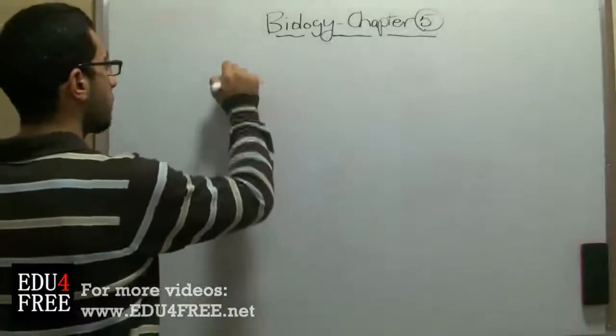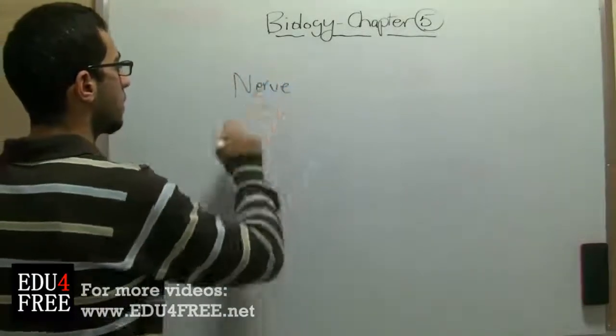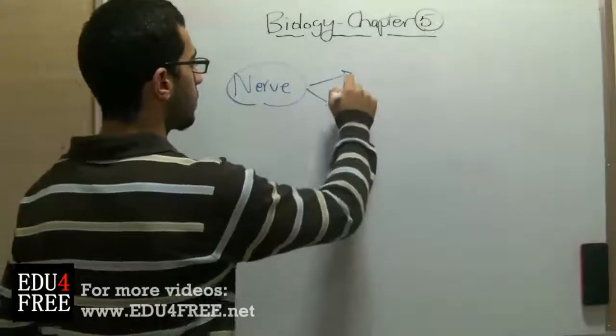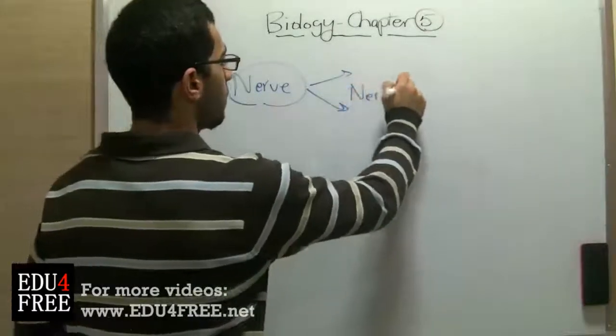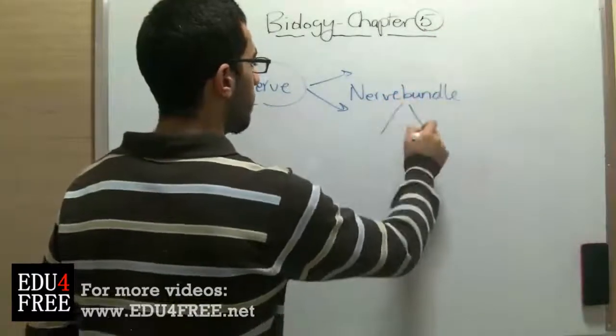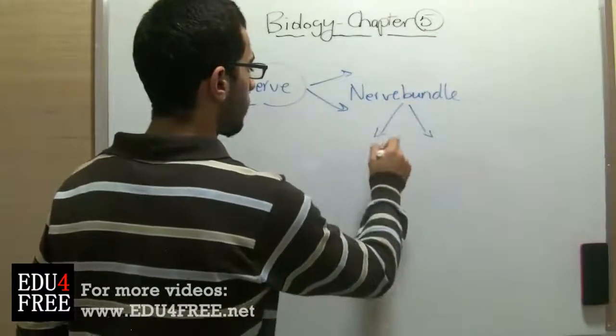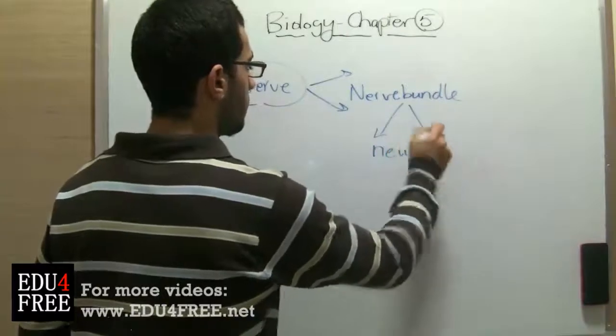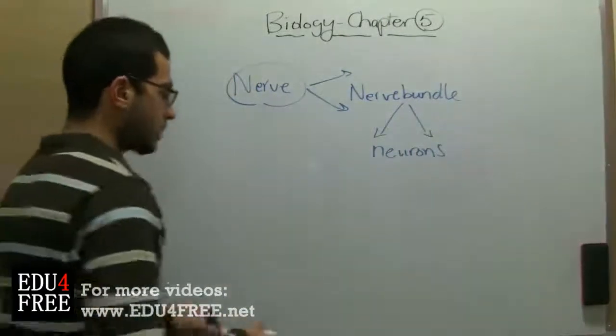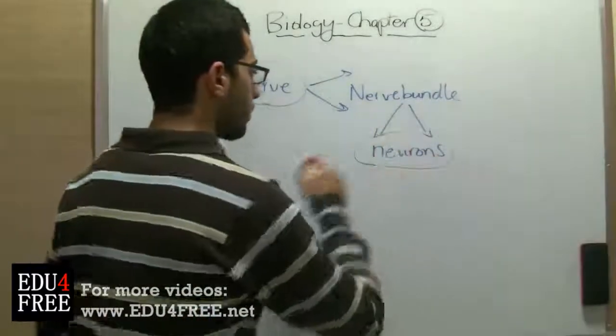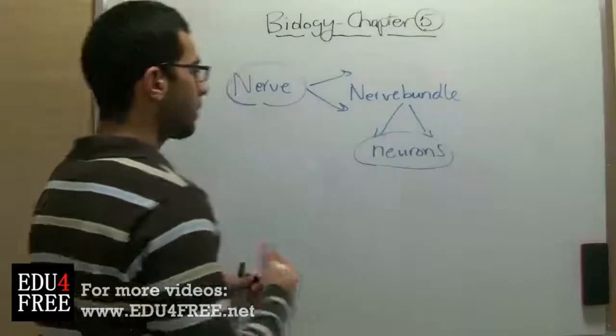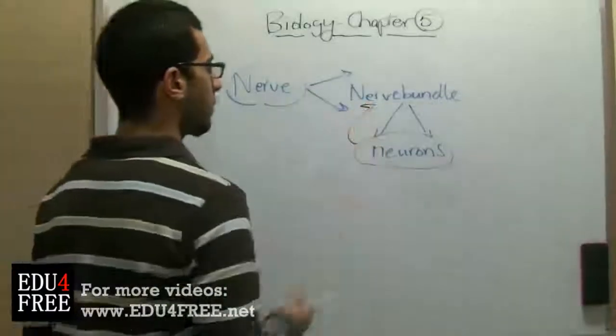So the nerve consists of a group of nerve bundles and each nerve bundle consists of a group of neurons. So let's begin with the neurons. We talked about the neurons in the previous time. So neurons group together in order to form a nerve bundle.